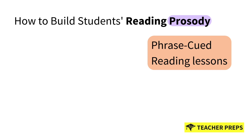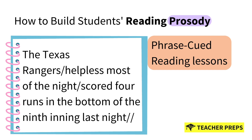The final strategy that helps build students' prosody — the way we read out loud, which is our intonation — is called phrase-cued reading, used to help students with appropriate expression. This strategy encourages readers to move beyond word-by-word reading to recognize and appropriately read phrases within sentences. A teacher selects and marks a text using slash marks to indicate natural pauses and phrase boundaries. For example: 'The Texas Rangers / helpless most of the night / scored four runs in the bottom of the ninth inning last night //' — one slash counts for a comma, two slashes for a period.